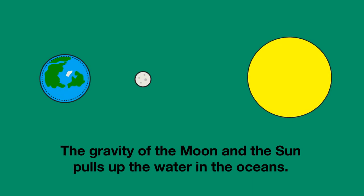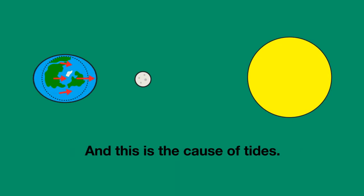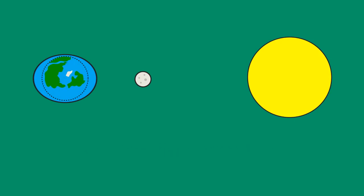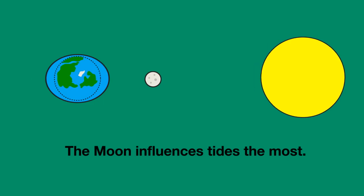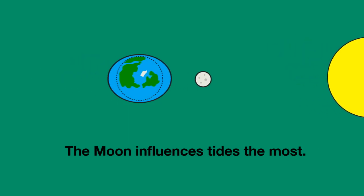The gravity of the Moon and the Sun pulls the water in the oceans, and this is the cause of tides. The Moon influences the tides the most, so let's first look at the Moon.